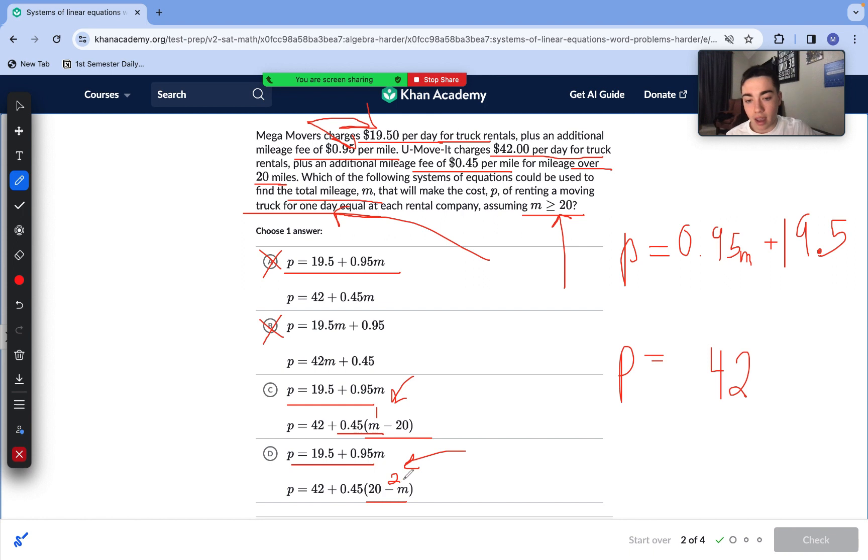For example, if M equals 21, then 21 minus 20 is 1, so we add 45 cents for that one mile. That makes sense. On the other hand, if M is 21, we do 20 minus 21 to reach negative 1, and that means our cost is actually decreasing in this format. 20 minus M, we are decreasing, which is not true. Additional cost adds on. That rules out answer choice D, meaning answer choice C is correct.